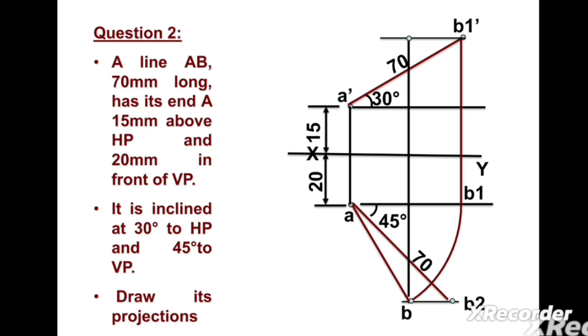A vertical line passing from b1', we will get the intersecting point b'. Now we can join a' and b'. This is the front view, or we can say the elevation of the line AB.